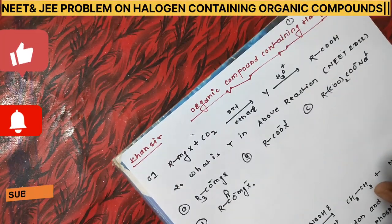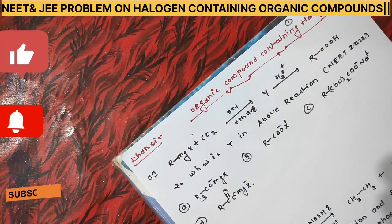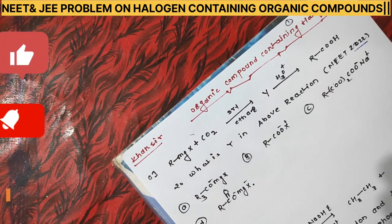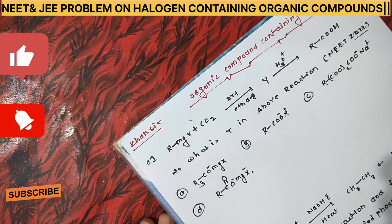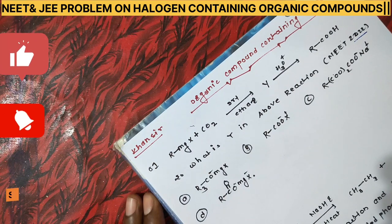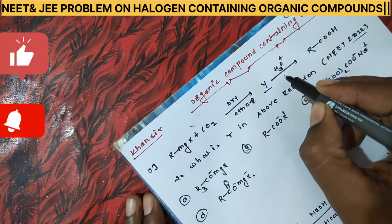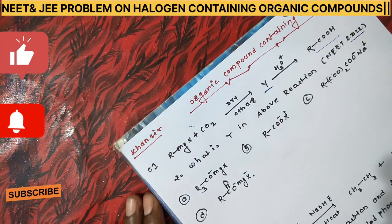Hi dear students, myself Cancer. Today we will solve a numerical asked in NEET 2022 exam. The chapter is organic compounds containing halogen. The reaction is: RMgX + CO₂ in the presence of dry ether gives Y, and Y further reacts with H₃O⁺ to give RCOOH (carboxylic acid).